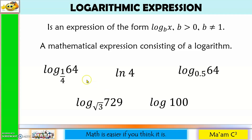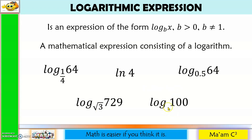Here are some examples: log, ln (which is a natural logarithm), log, log, and log. Let us examine the bases. One-fourth is greater than 0. The natural logarithm has base e, which is greater than 0 and approximately equal to 2.71828. 0.5 is greater than 0. The square root of 3 is greater than 0. And if there is no base shown, it means the base is 10 — this is the common logarithm. So these are logarithmic expressions.